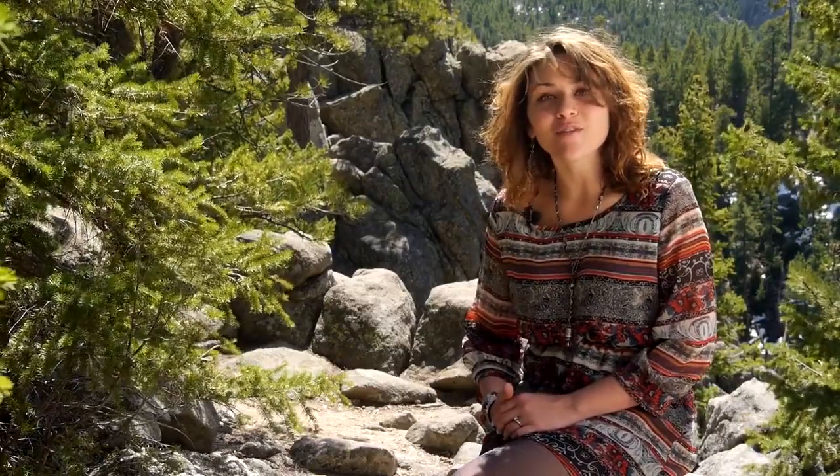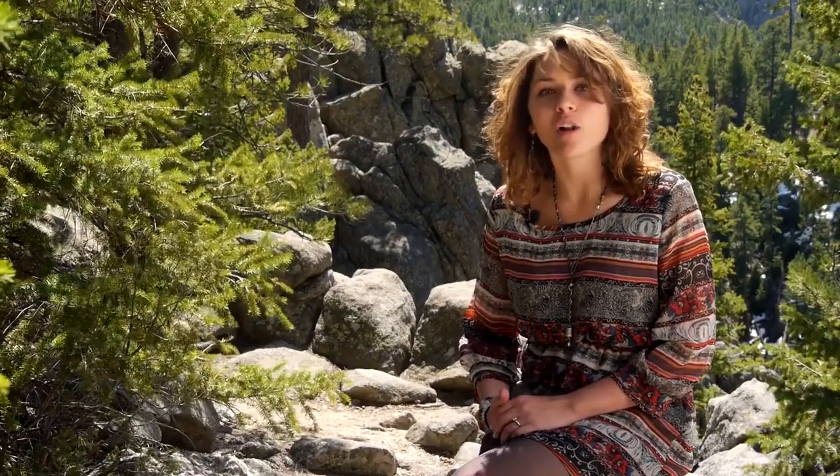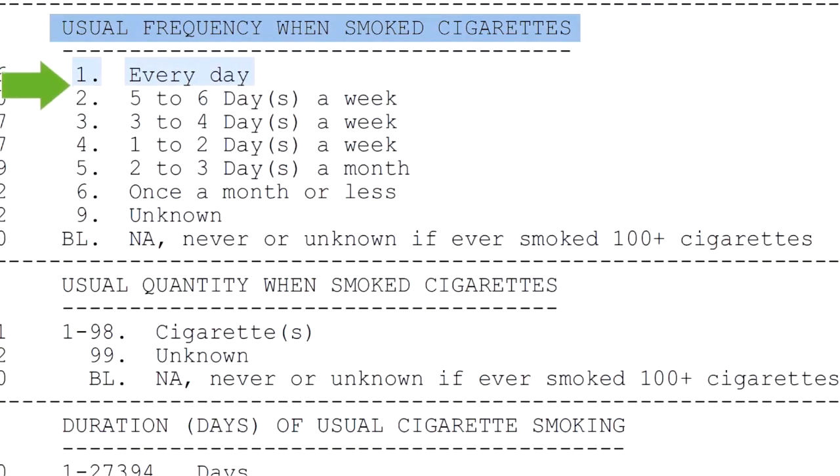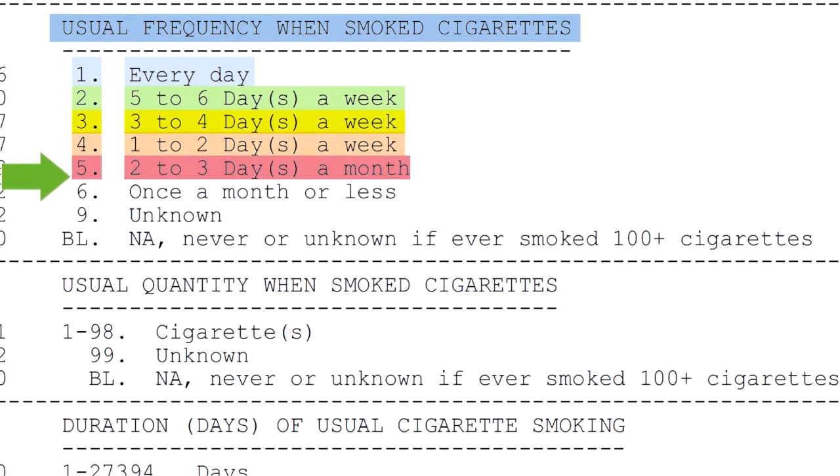Another very useful step in data management is to give your variables response codes that may be more logical than those they were originally given. For my variable, usual smoking frequency, you can see from the codebook entry that lower values mean that the respondents smoked more, and higher values means the respondents smoked less. Perhaps this seems counterintuitive to you. We could choose to reverse code this variable so that higher values mean more smoking, and lower values mean less smoking.